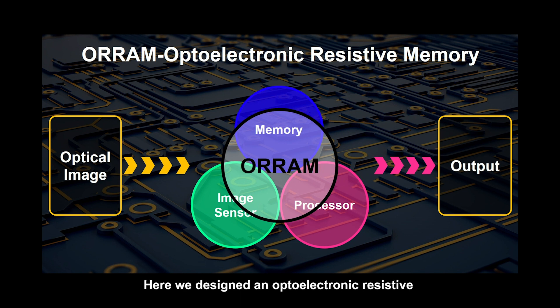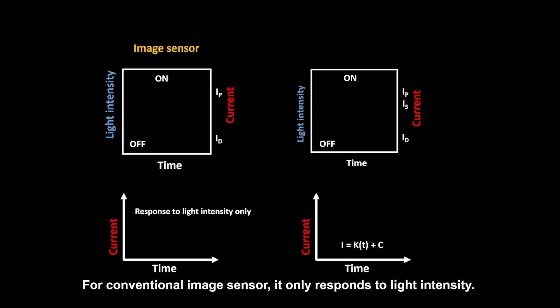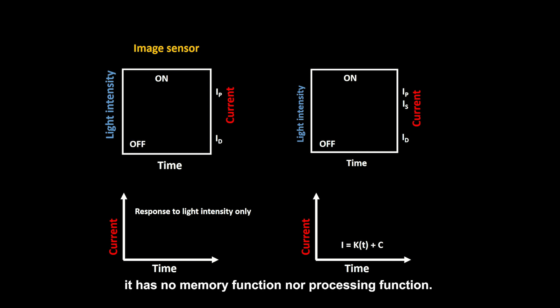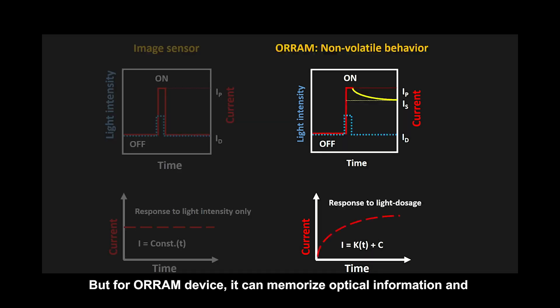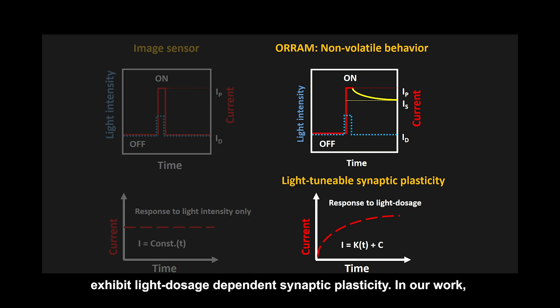Here we designed an opto-electronic resistive switching memory device called a RAM. For a conventional image sensor, it only responds to light intensity, and once light is removed, the current immediately becomes zero — it has no memory function and no processing function. But for a RAM device, it can memorize optical information and exhibit light dosage-dependent synaptic plasticity.